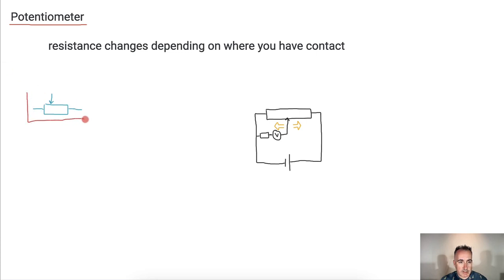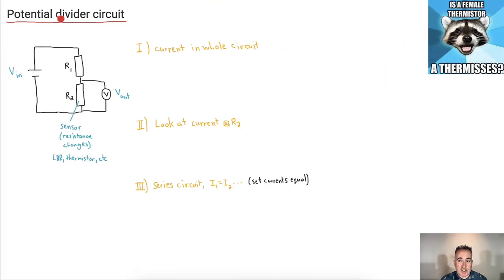That was actually not so bad. Now using variable resistance we can actually make a circuit for this. Is a female thermistor a thermis? Oh that's stupid. So we have a kind of circuit where we can put a sensor, something like an LDR, a thermistor, whatever you want.